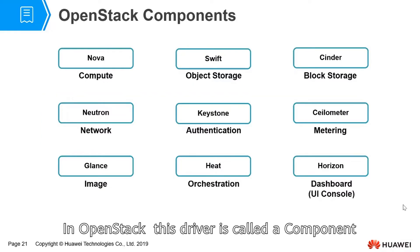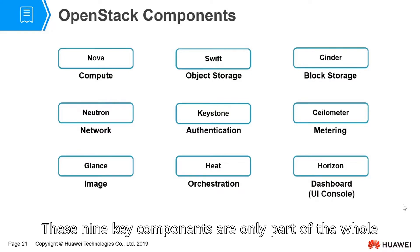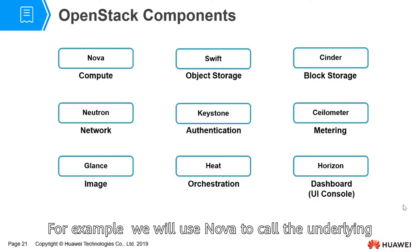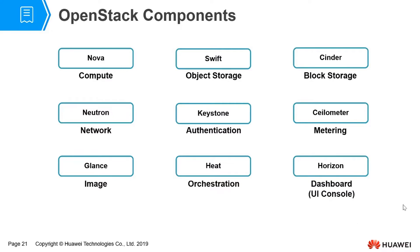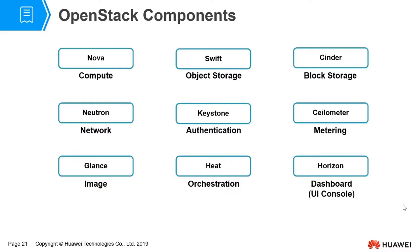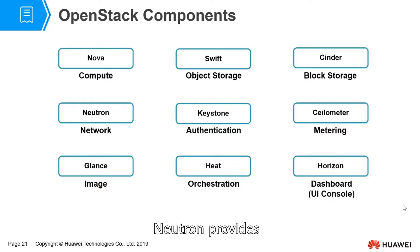In OpenStack, this driver is called a component, and there are 9 key components. These 9 key components are only part of the whole, not all. For example, we use Nova to call the underlying computing resource to create computing services. Swift handles object storage. Cinder calls the resource of the block. Neutron provides network service, and more.